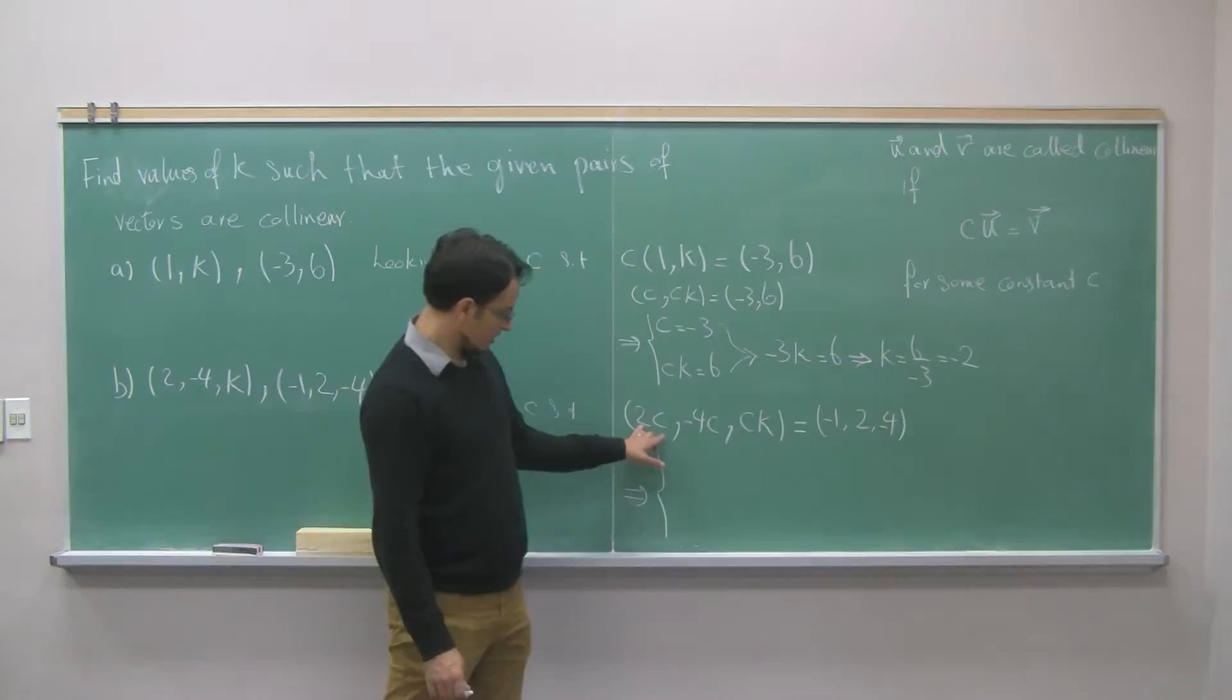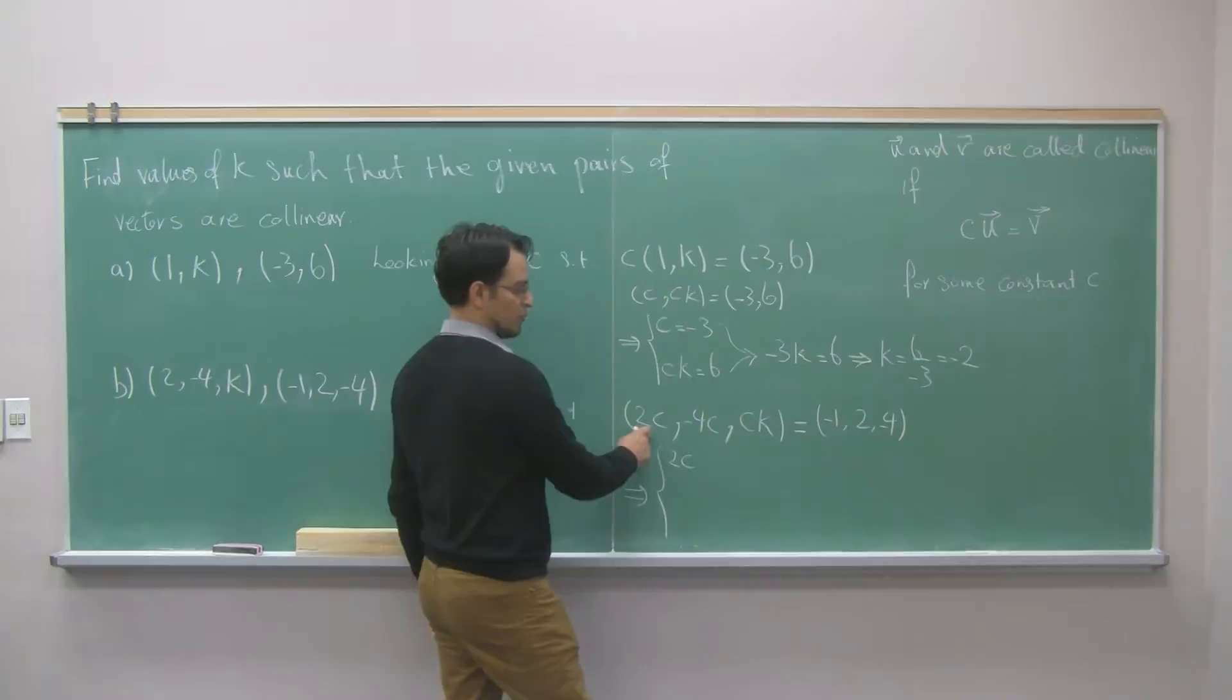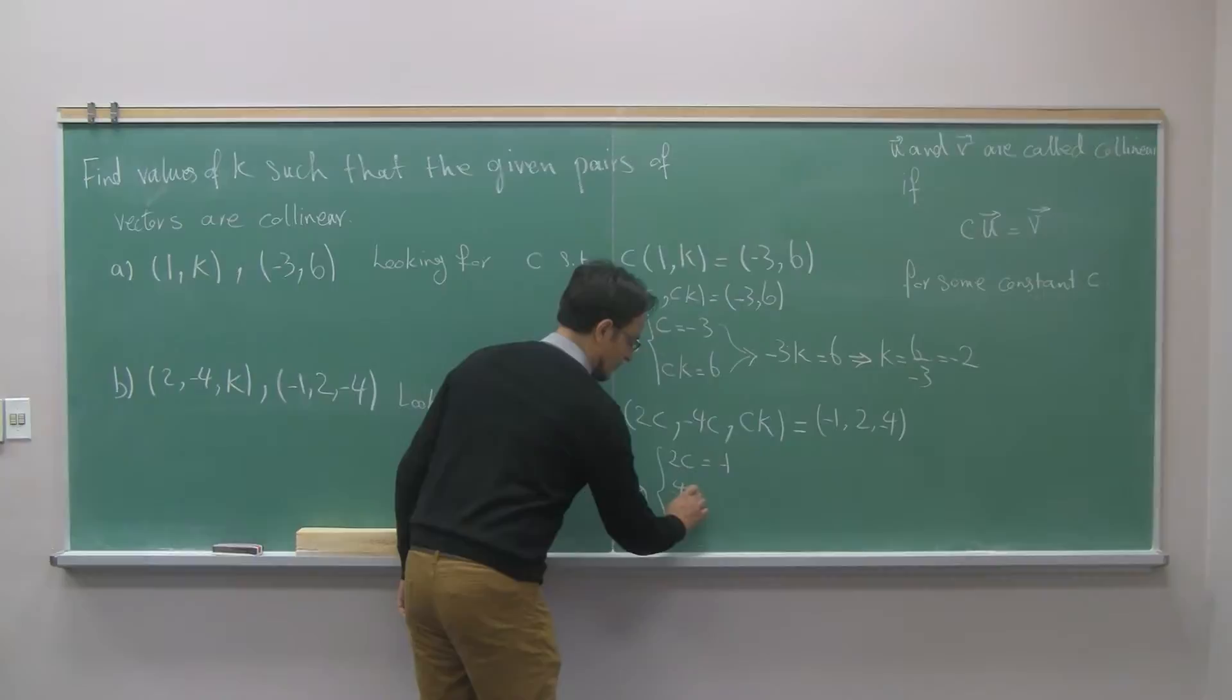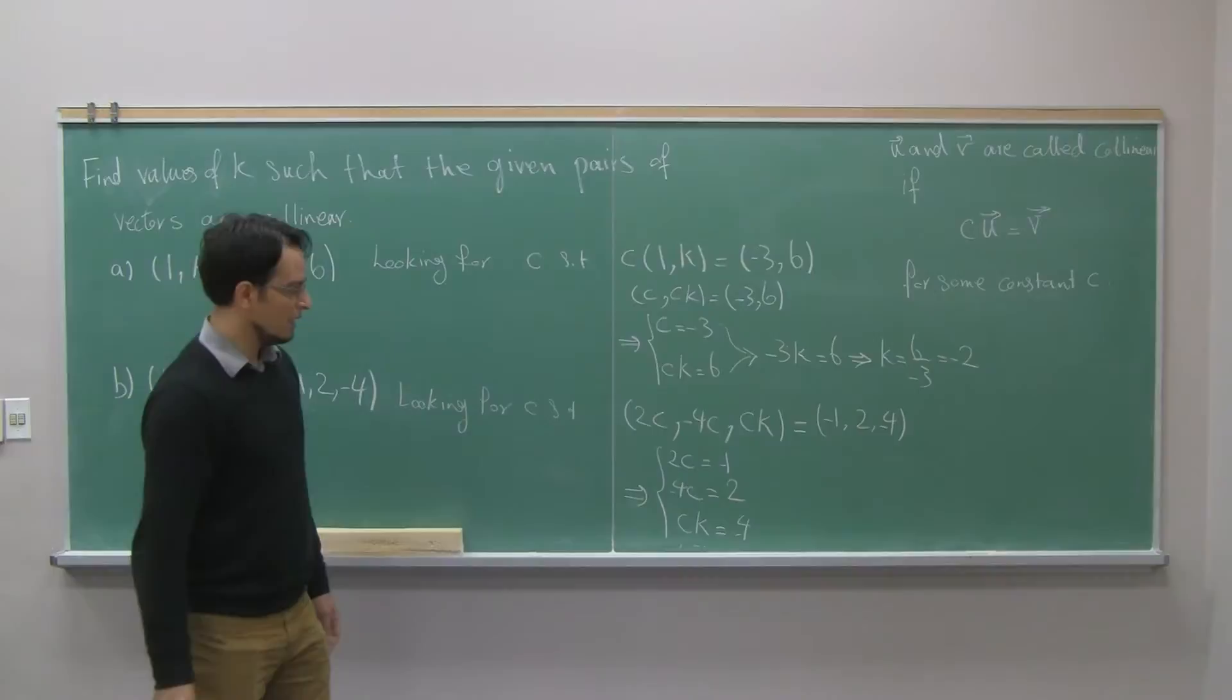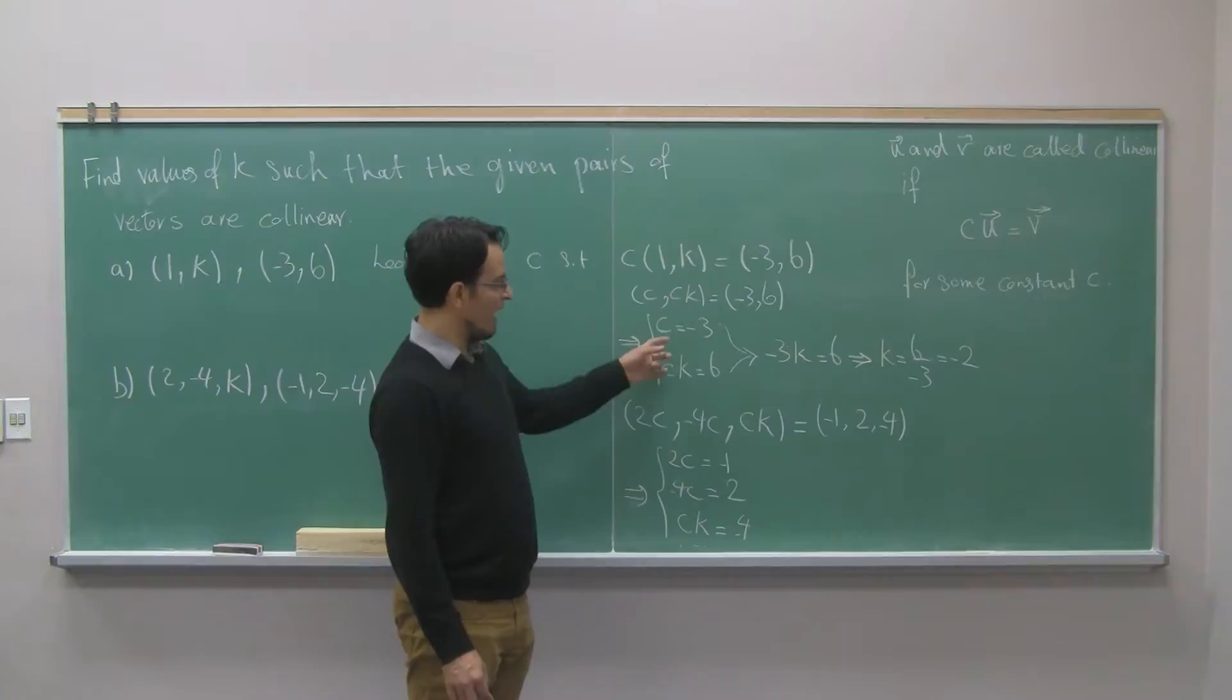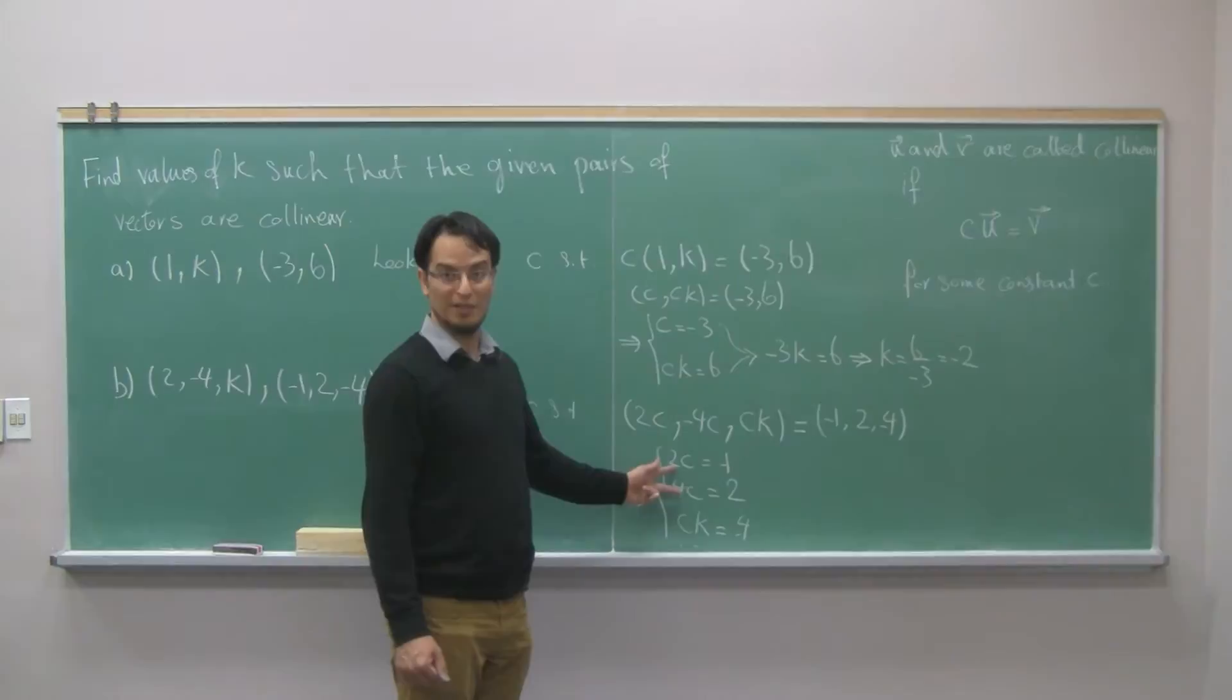The first component of the first one should be equal to the first component of the second one. Second component of the first one should be equal to the second component of the second one. And, same with the third component. Here, the situation is a bit different. Instead of having one equation for c, I have more than one equation for c.